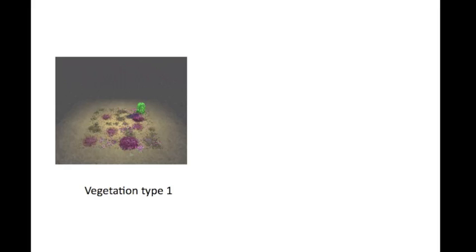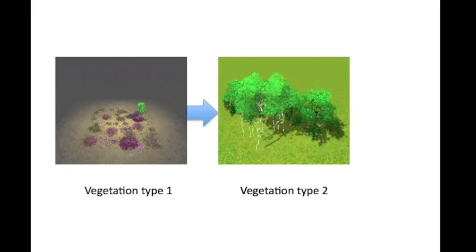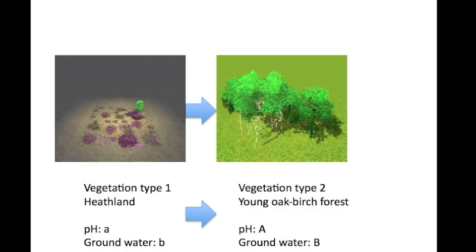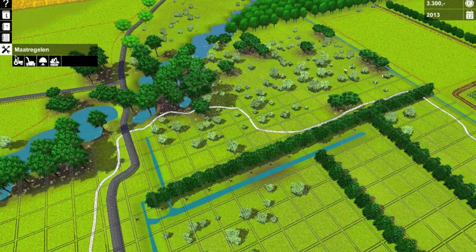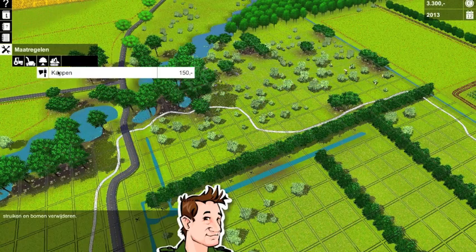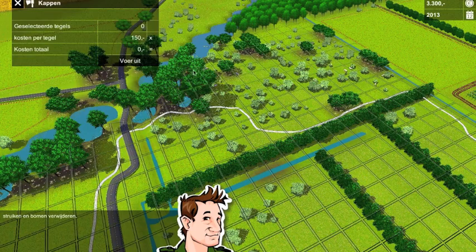Time is an important factor in Ecosim. Over time, tiles transform from one vegetation type into another, just like in natural succession. The same goes for the underlying ecological data. Besides time, nature management has an effect on these changes in vegetation and ecological parameters. So it is possible to influence, through nature management, the vegetation and its ecological features.